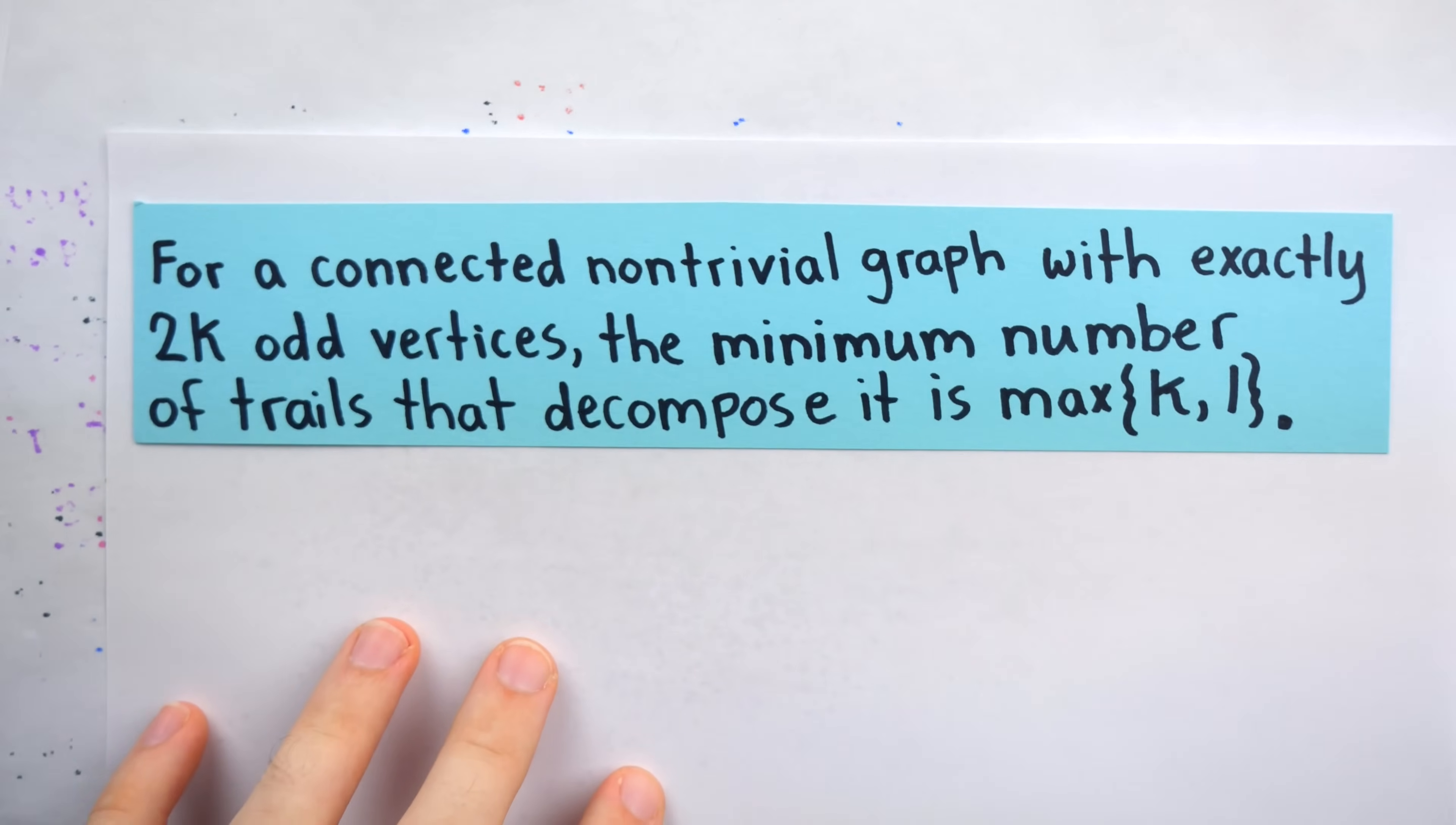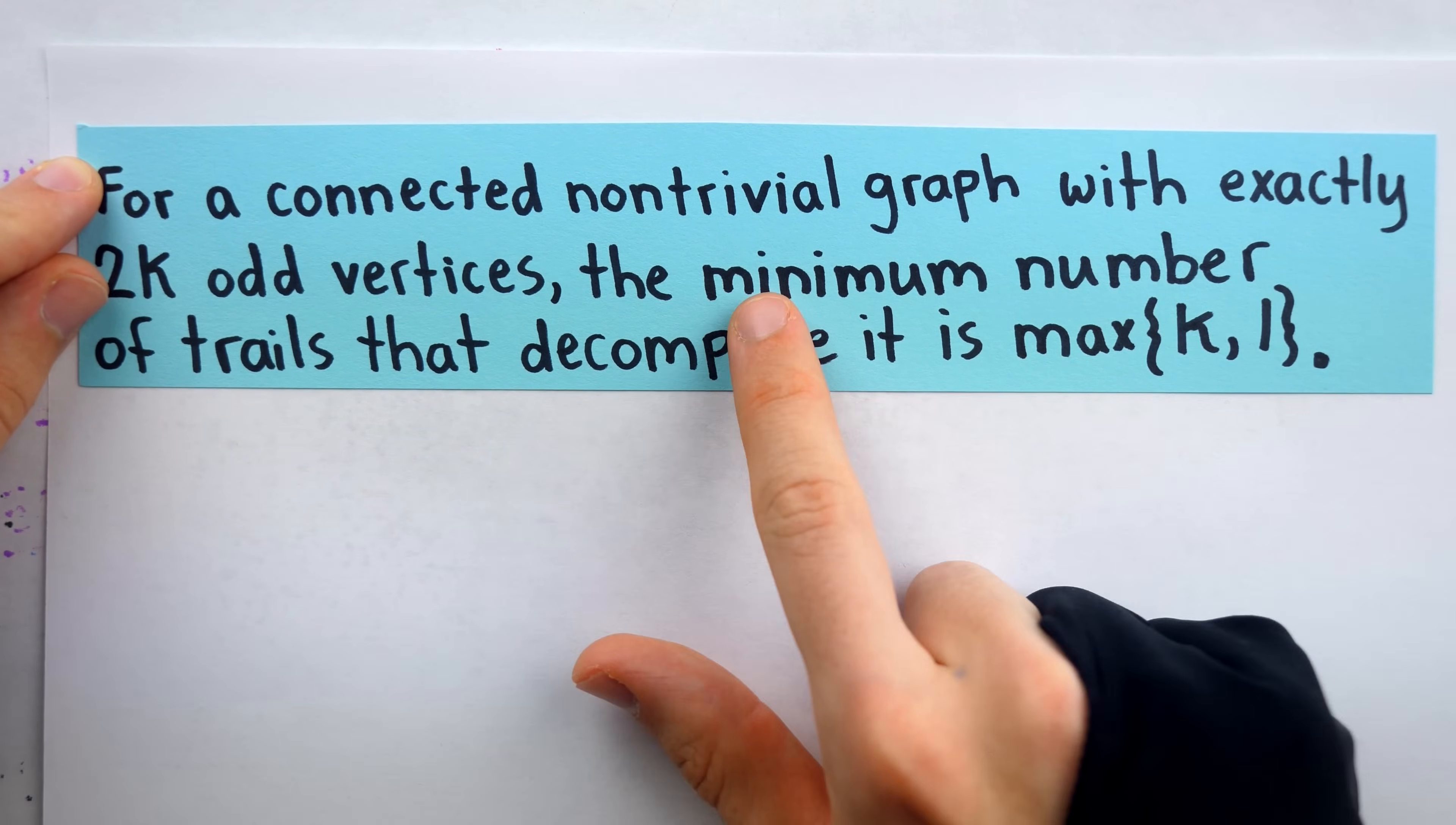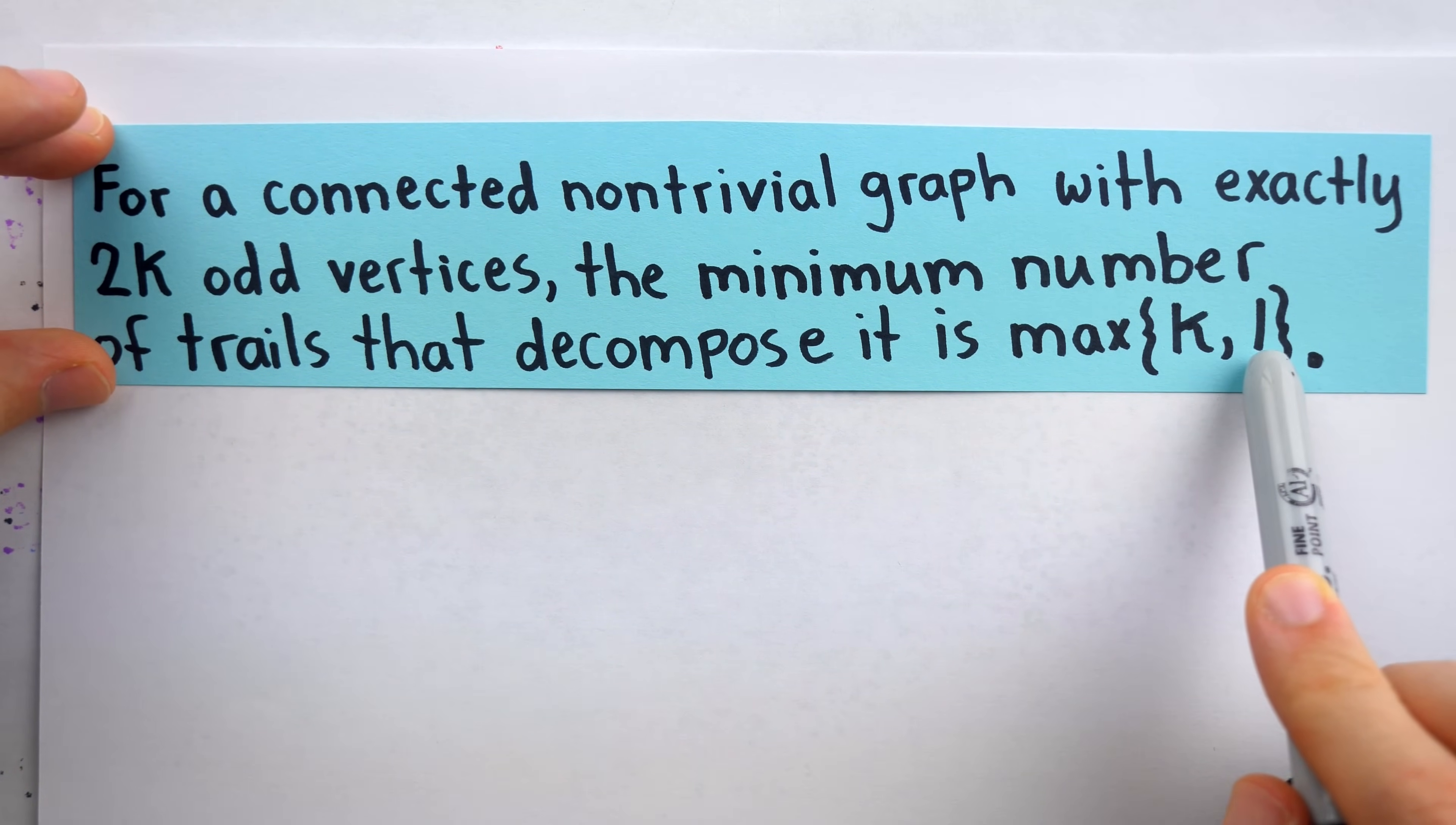All right, so here's statement of our claim, and we're going to prove this bad Larry. For a connected, non-trivial graph, that means it has at least two vertices, which also means it has an edge since it has to be connected, with exactly 2K odd vertices, the minimum number of trails that decomposes it is the maximum of K and one. So again, non-trivial means it has at least two vertices, which forces it to have an edge because it's connected. We're looking at the minimum number of trails, because of course, we could take any graph, like this one, and just take every single edge as a trail of the graph, and thus decompose it into a bunch of trails. That's not really interesting. We're trying to figure out the most efficient way to decompose it into the minimum number of trails possible.